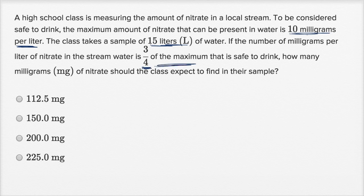Well, they tell us up here. Let me underline this from the card. The maximum amount of nitrate that can be present in water is 10 milligrams per liter. So what the class finds is that their sample has three-fourths of this maximum value.